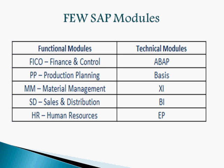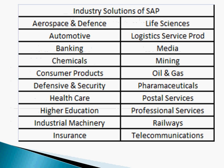Here I have listed out a few SAP modules — functional and technical. This is just a basic list for beginners. The functional modules include FICO (Finance and Control), PP (Production and Planning), MM (Material Management), SD (Sales and Distribution), and HR (Human Resources). The technical modules include ABAP, Basis, XI, BI, and EP.